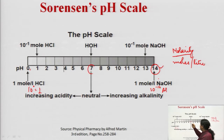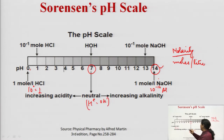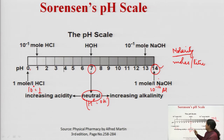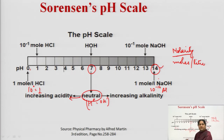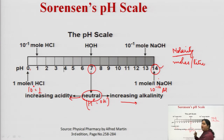At the center, at pH 7, the hydrogen ion concentration is equal to the hydroxyl ion concentration, and the solution is neutral. Moving towards the left from this neutral point, acidity increases, and moving towards the right, the alkalinity of the solution increases.